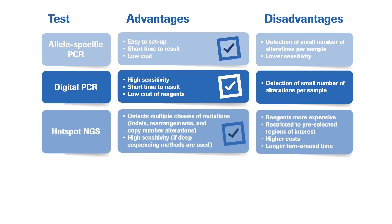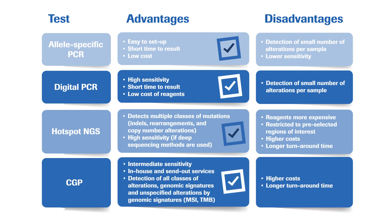PCR-based techniques can detect all classes of mutations with relatively high sensitivity; however, the reagents are more costly and the turnaround time is longer. CGP techniques can detect all classes of alterations, genomic signatures, and unspecified alterations by genomic signature, but are associated with higher costs and longer turnaround times.